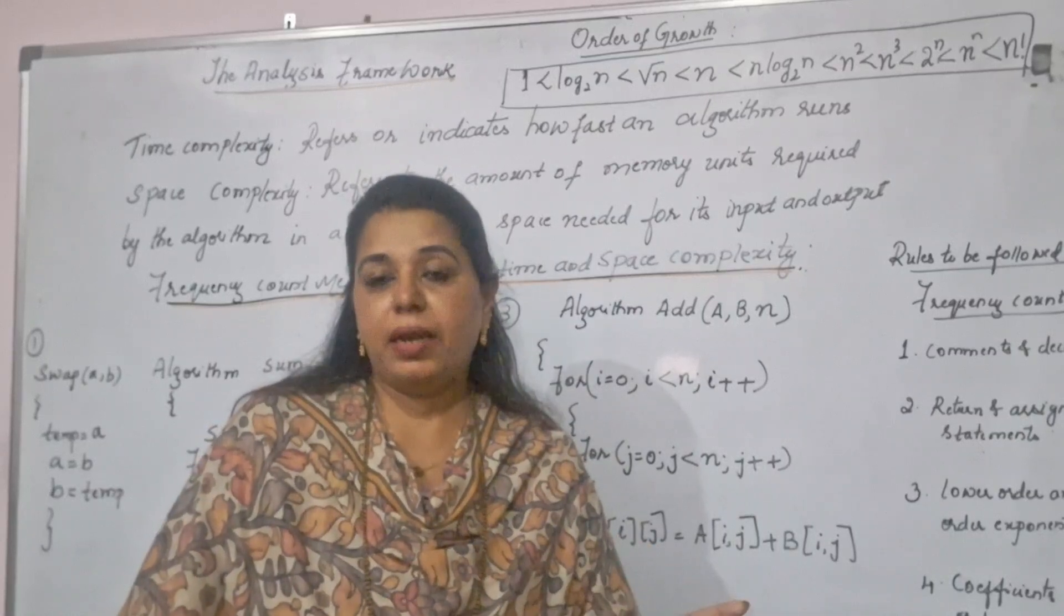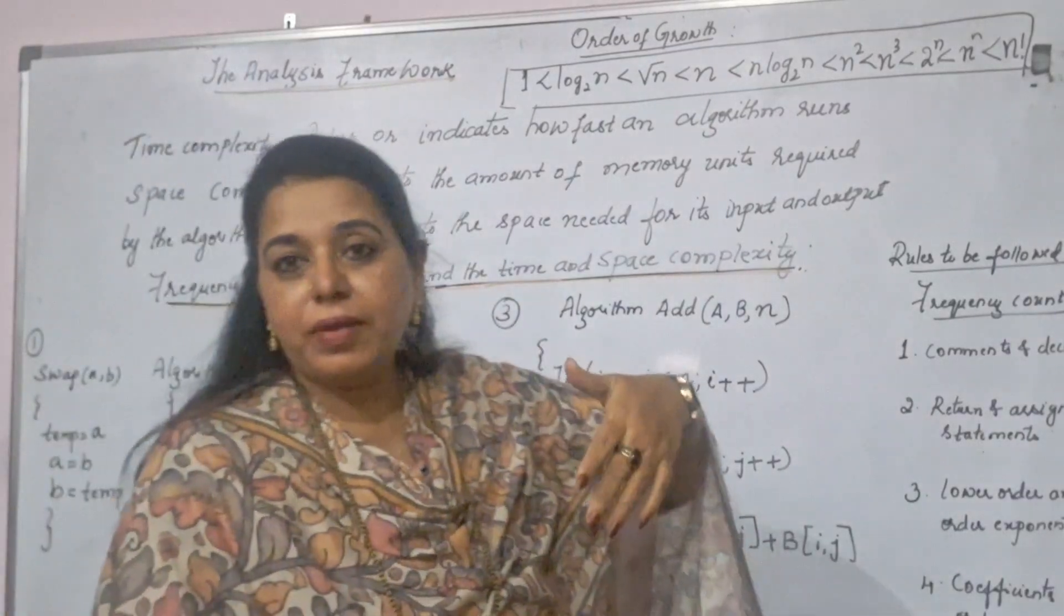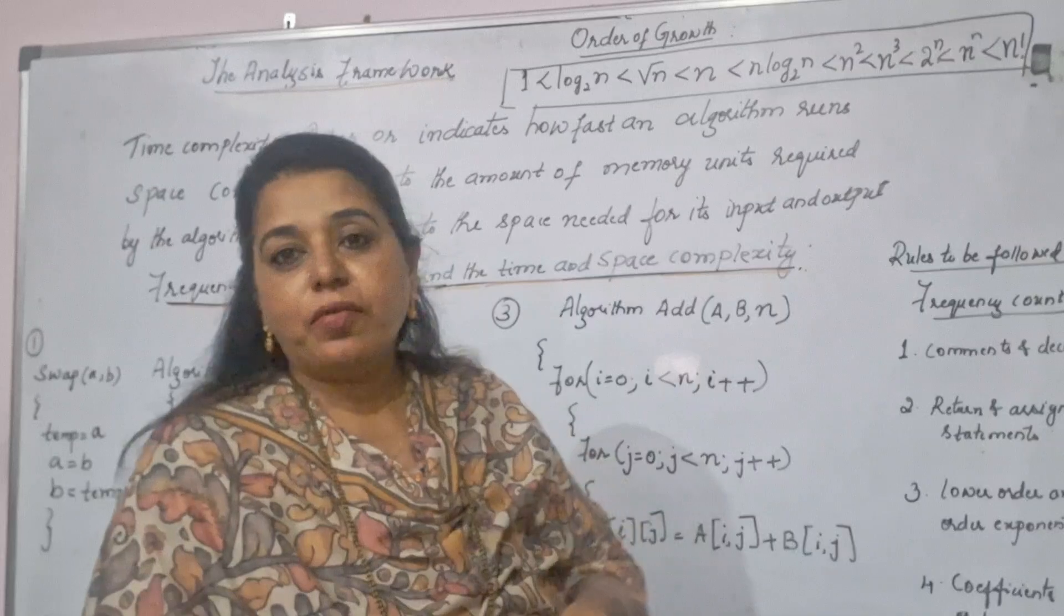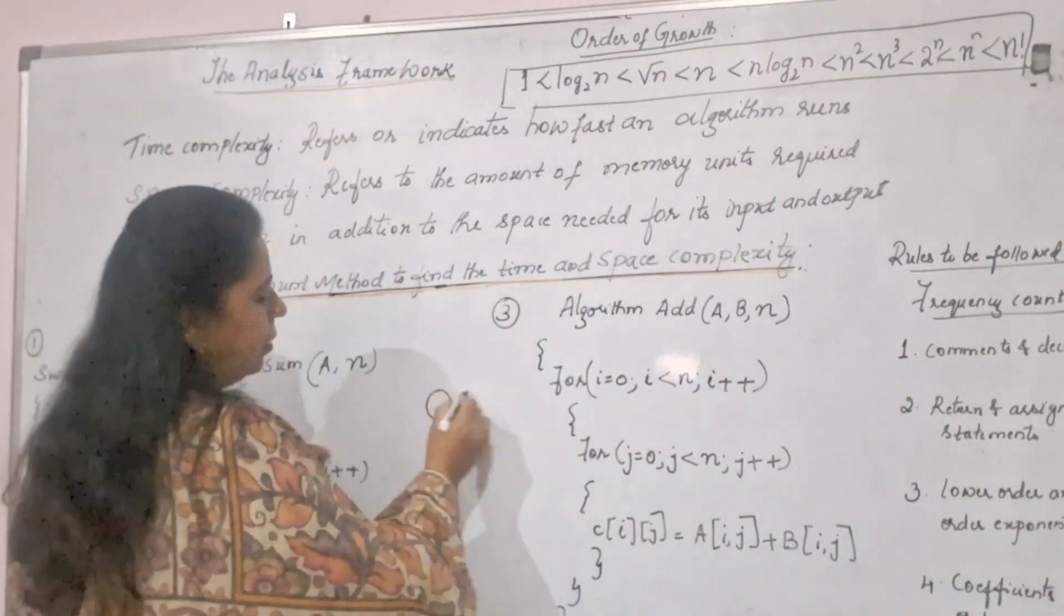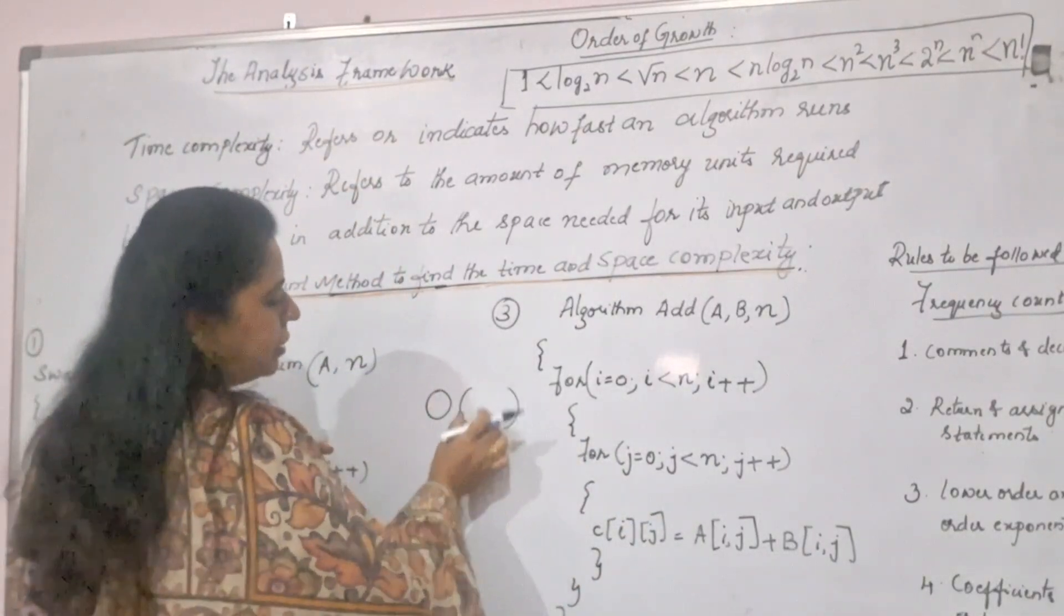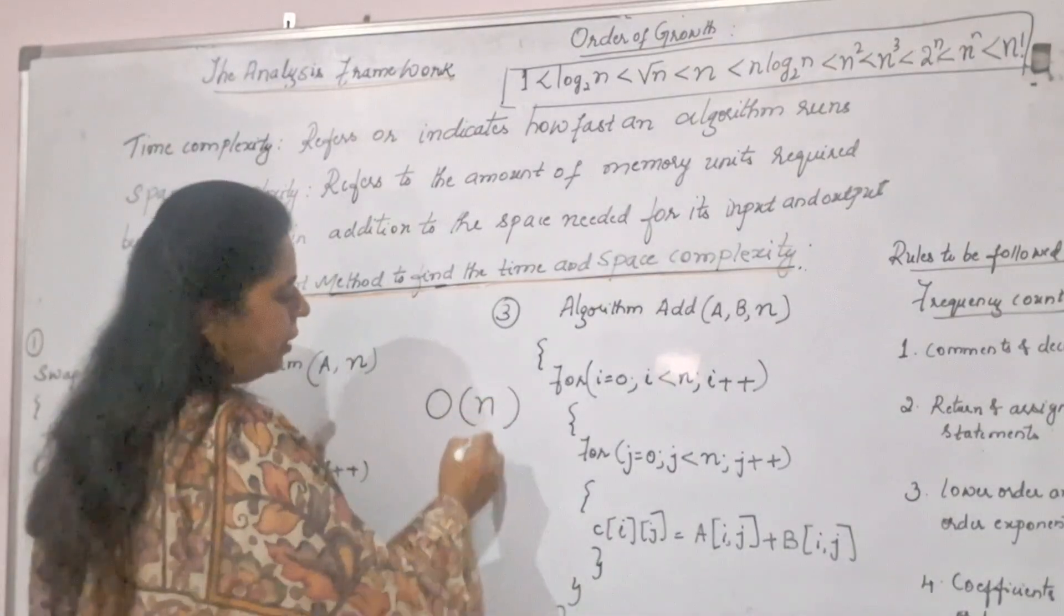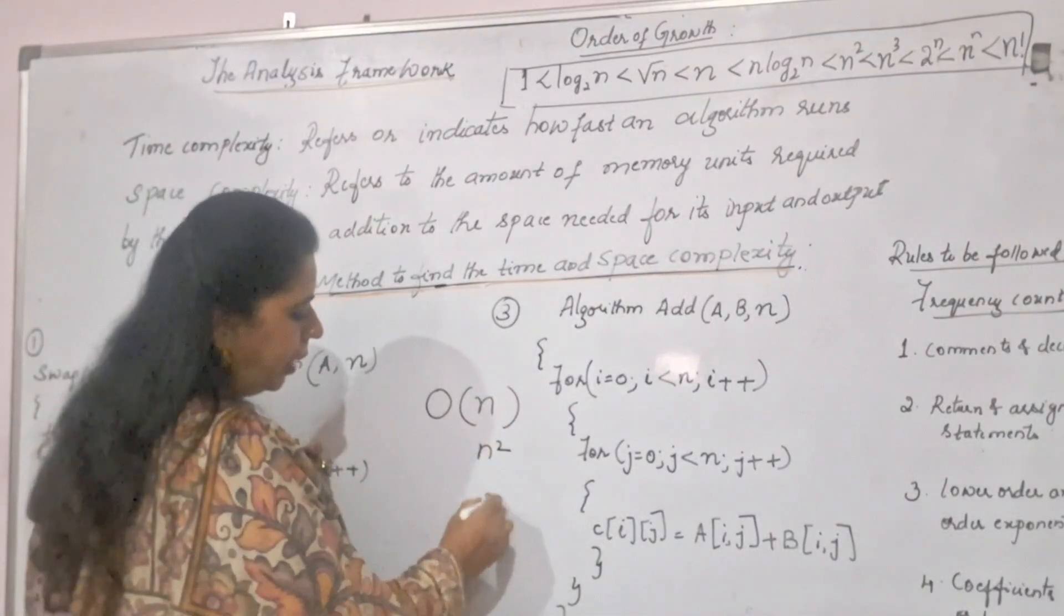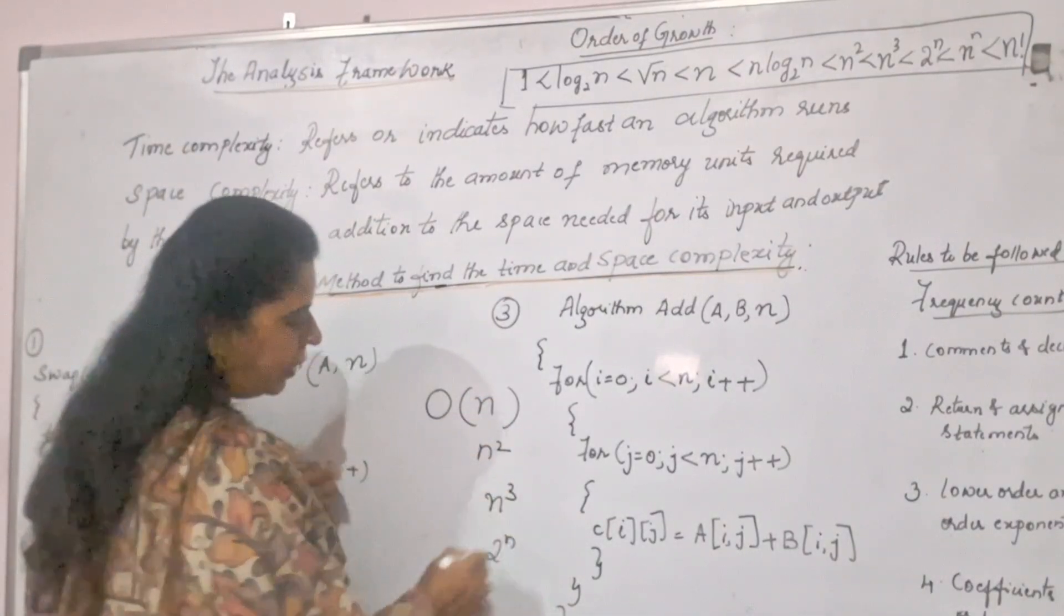And also to compare these running times with the order of growth. Because we are representing the running time of an algorithm with order followed by the function which you get - it can be n, it can be n square, it can be n cube, it can be 2 to the power of n like this.